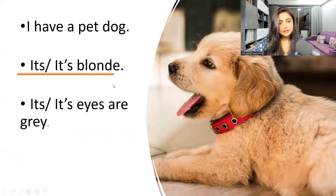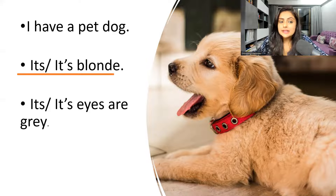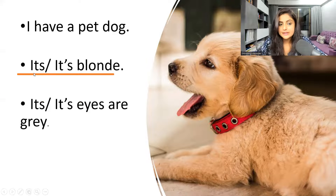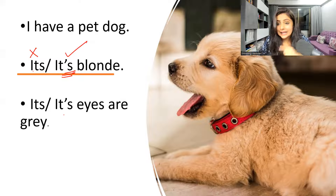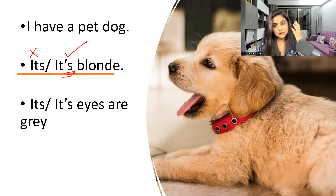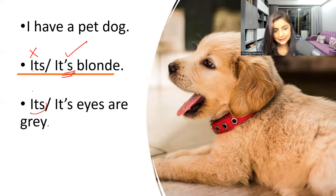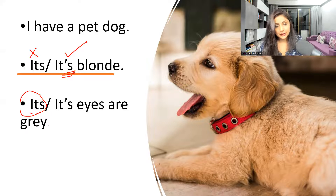Let's check this example: 'I have a pet dog.' Which is correct — 'it's blonde' or 'its blonde'? Here I'm trying to say 'it is blonde,' so 'it's' with an apostrophe is correct, and 'its' without an apostrophe is incorrect. But when I say 'its eyes are gray,' I am indicating possession — the eyes that it possesses. Since it indicates possession, 'its' without an apostrophe is correct.